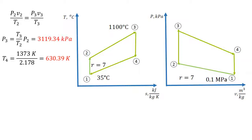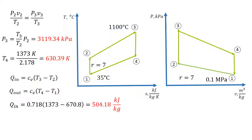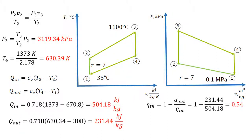With this information, we can find the heat input and the heat output to calculate the efficiency. Cv is the specific heat value of air, which is 0.718. The heat input is 504.18 kJ per kg. And the heat output is 231.44 kJ per kg. There are two ways to calculate the efficiency: the first one is to use the heat input and the heat output, which gives 0.54; and the second one is by using the compression ratio and the k value, which also equals 0.54. In both cases, we get the same value.